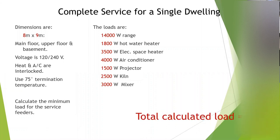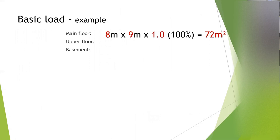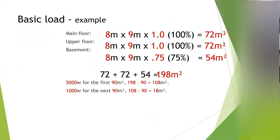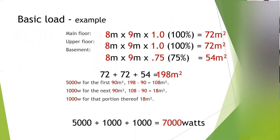Did you get a total load of 19,625? Let's go through it. For the basic load — same calculation as before. Main floor 8×9 × 100%, upper floor 8×9 × 100%, basement 8×9 × 75%. First 90 m² = 5,000 watts, next 90 m² = 1,000 watts, excess 18 m² portion = 1,000 watts. Basic load: 7,000 watts.